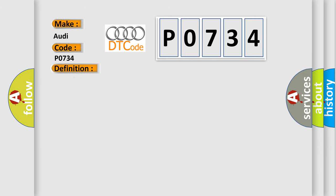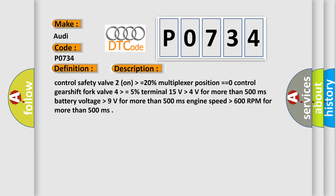And now this is a short description of this DTC code. Control safety valve 2 on higher than equals 20%, multiplexer position equals zero, control gearshift fork valve 4 higher than equals 5%, terminal 15 volts higher than 4 volts for more than 500 milliseconds, battery voltage higher than 9 volts for more than 500 milliseconds, engine speed higher than 600 RPM for more than 500 milliseconds.